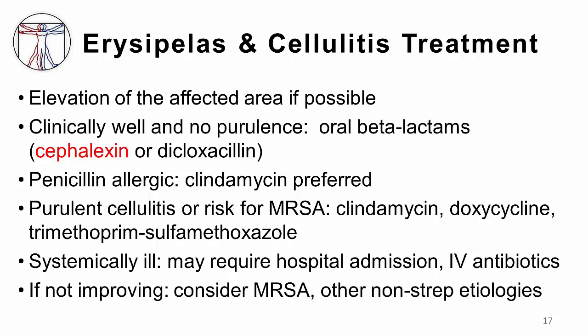If a patient is allergic to beta-lactam antibiotics, clindamycin is the agent of choice. For patients with a purulent exudate associated with their cellulitis, or patients in whom Staph aureus is suspected based on risk factors, an anti-MRSA agent should be added. Clindamycin can be used to cover both strep and staph.